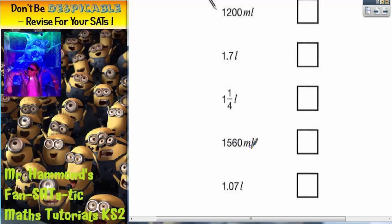Now we need to turn them all into the same unit and it's probably going to be easier to turn them into millilitres. So what we need to remember is that one litre is actually the same as a thousand millilitres.